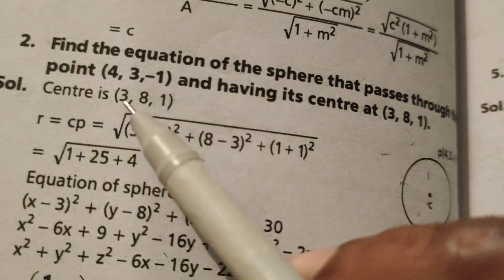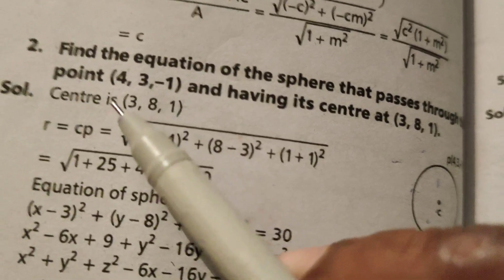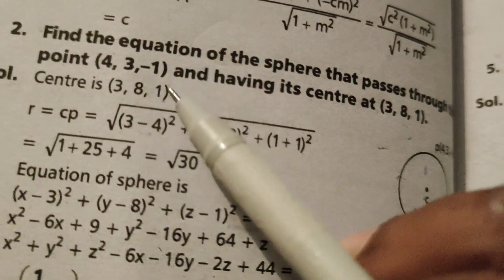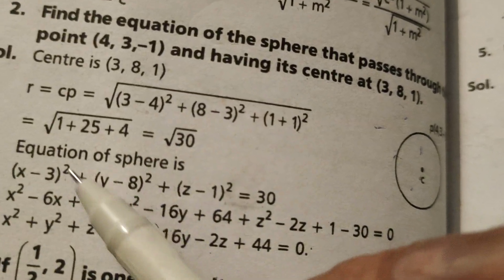x1, y1, z1 means (3, 8, 1). x2, y2, z2 means (4, 3, -1). Okay, square root of, simplify this.